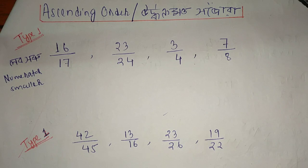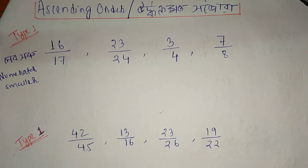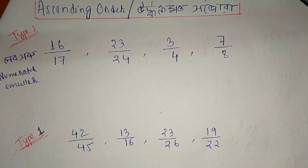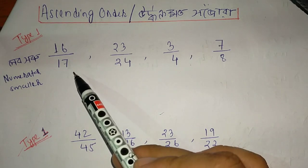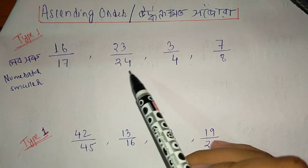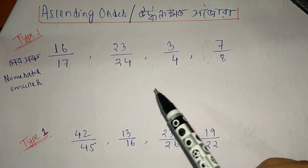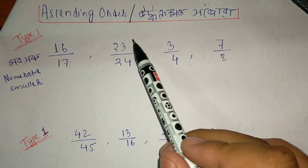I'm going to go through the SRIELY SABAPARIVA video series V1, V2, V3. We are going to discuss the details of this video. You can work out the answers in the next exam. The first question involves fractions: 16 by 17, 23 by 24, 3 by 4, and 7 by 8 in ascending order.